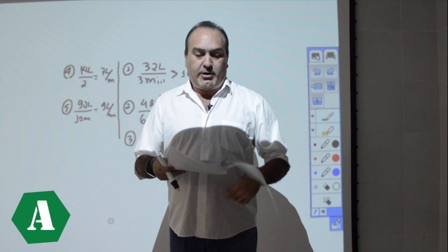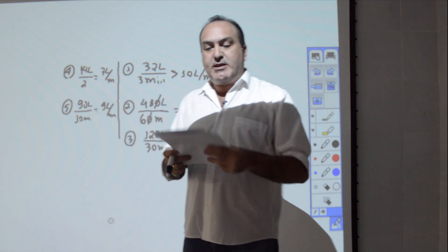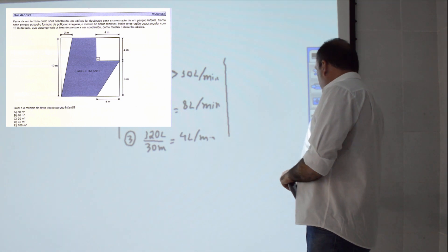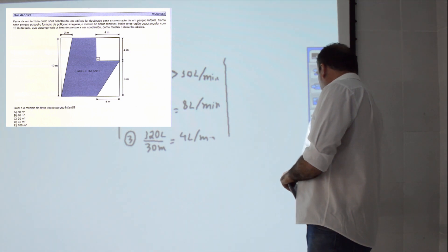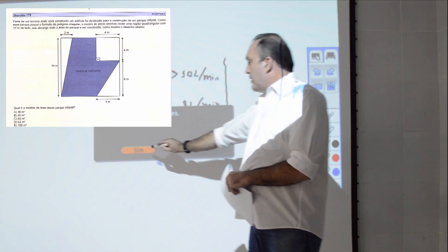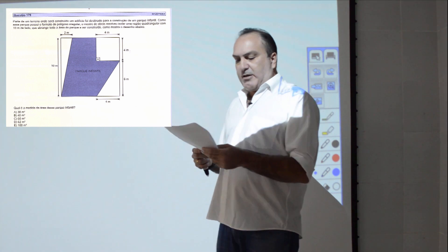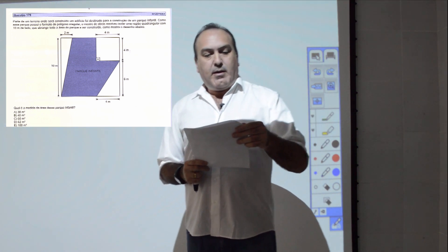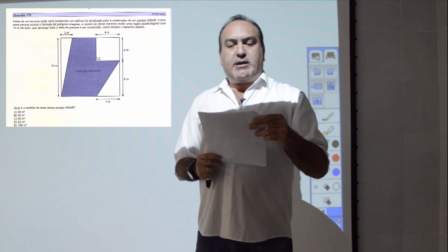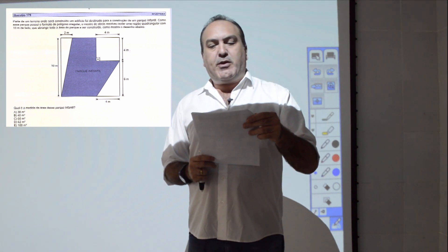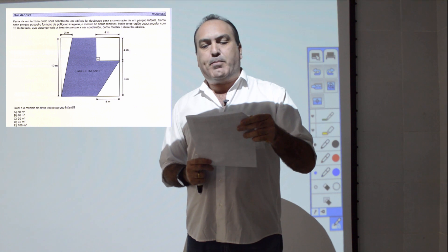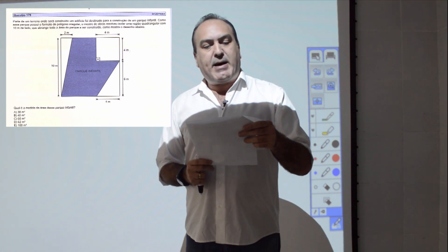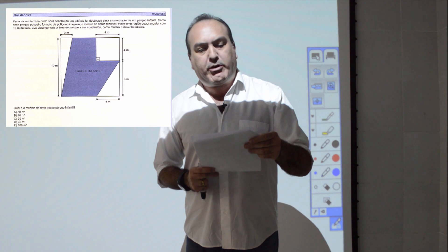Questão 178: uma indústria de laticínio possui 5 tonéis com diferentes vazões. Tonel 1: 32 litros a cada 3 minutos (mais de 10 L/min). Tonel 2: 480 litros em 60 minutos = 8 L/min. Tonel 3: 120 litros em 30 minutos = 4 L/min. Tonel 4: 14 litros em 2 minutos = 7 L/min. Tonel 5: 90 litros em 10 minutos = 9 L/min. O tonel com maior vazão, esvaziado mais rapidamente, é o tonel 1. Item A.